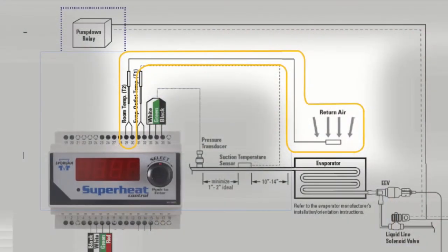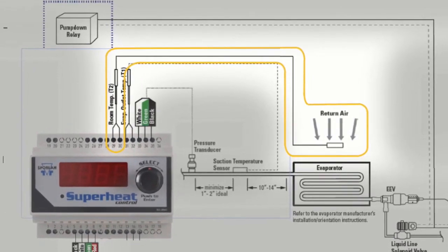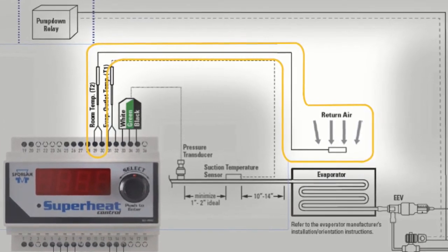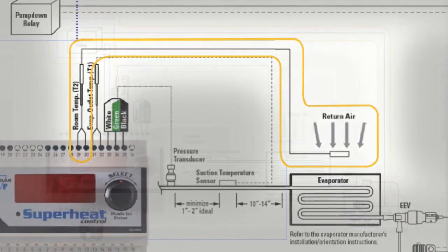The next connection is the optional room or box temperature sensor. Be sure to mount the sensor in the area you want to control. Install it at least 4 inches from the surface of the evaporator, then connect the sensor wires to terminals 29 and 30.